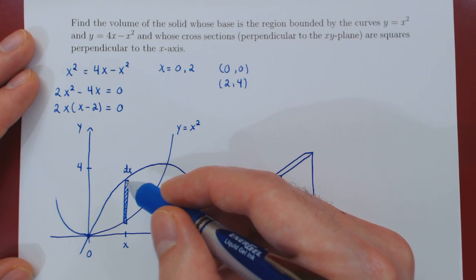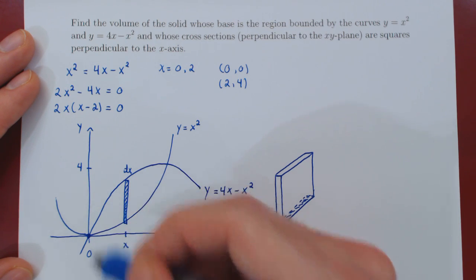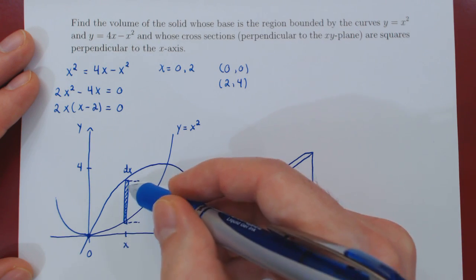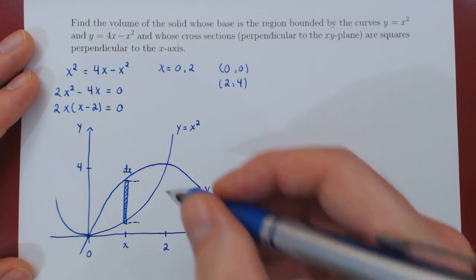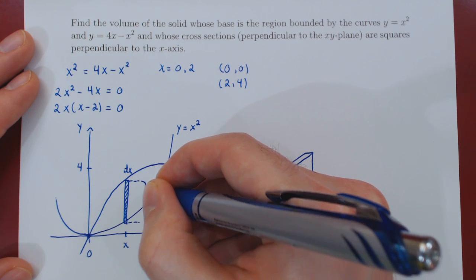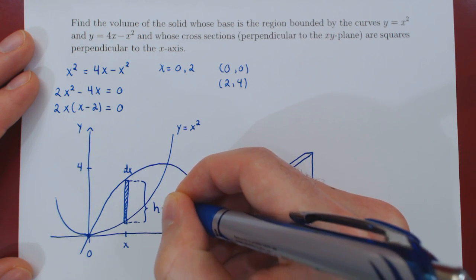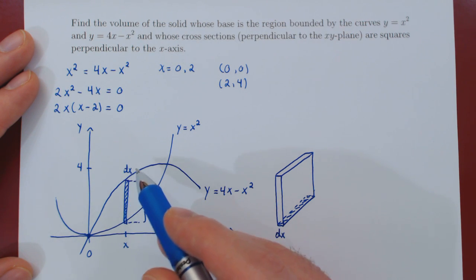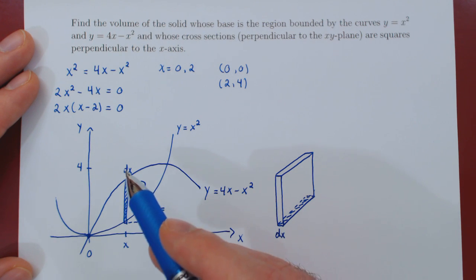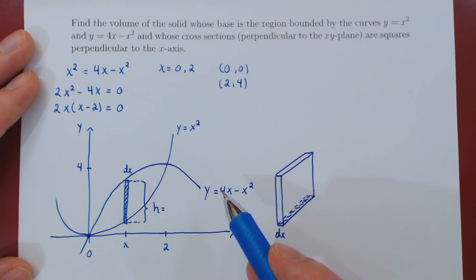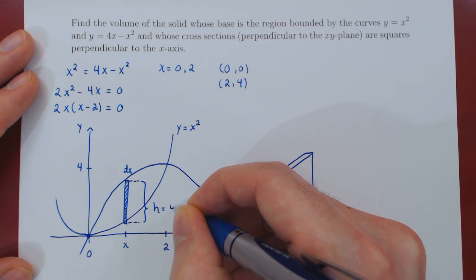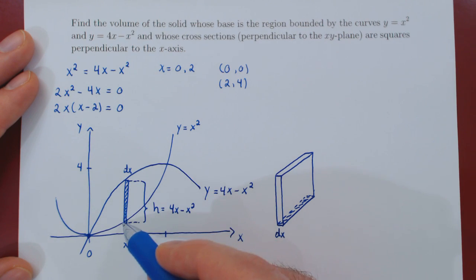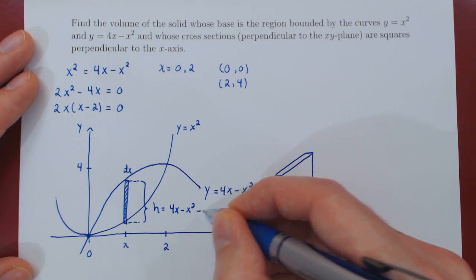Well, the length of the rectangle is a segment along the y-axis, so we need the y value up and the y value down. Well, up here, y, and because we have dx, everything we measure must be in terms of x. So, up here, y is 4x minus x squared. And then minus the y value here, which is x squared, so minus x squared.